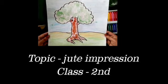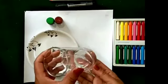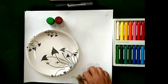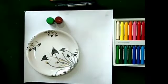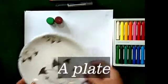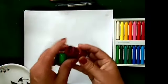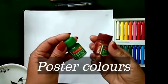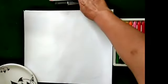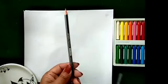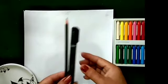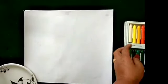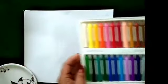Good morning children. How are you? Today I will teach you how to print jute impression on a tree. Materials used: water, a piece of jute, a plate, poster colors, pencil, black sketch, crayons, and white sheet.